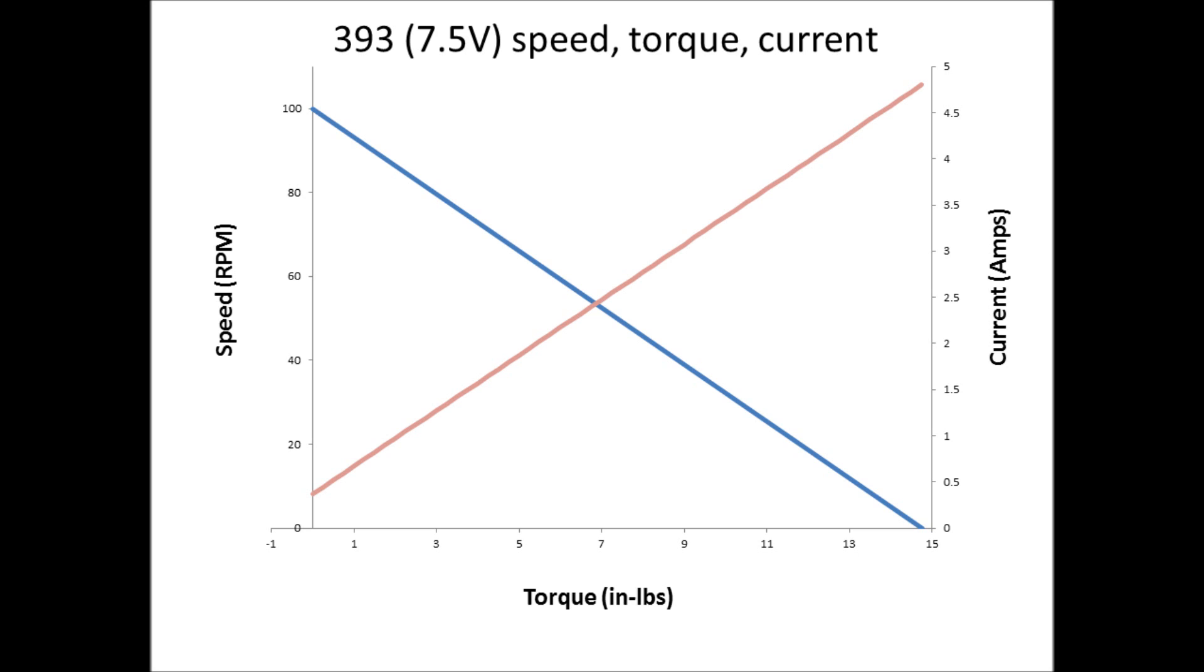The relationship between speed and current is also linear. The maximum current is 4.8 amps at 0 RPM. The minimum current is 0.37 amps at 100 RPM where the torque being generated is just enough to overcome the motor's internal friction.